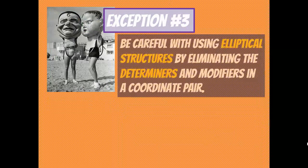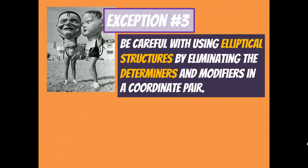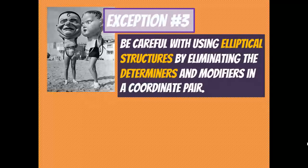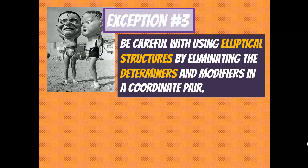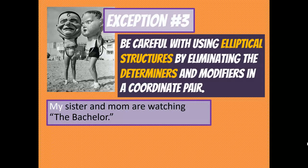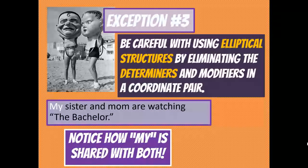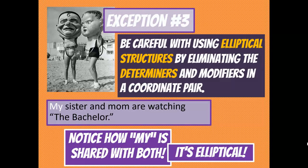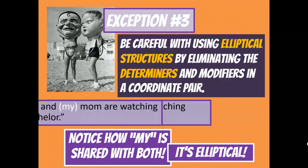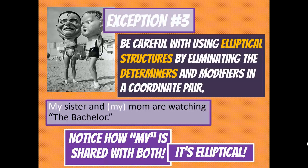The last exception is the elliptical structure — eliminating determiners and modifiers in a coordinate pair. For example, 'my sister and mom are watching The Bachelor': the word 'my' is being shared by both. We're really saying 'my sister and my mom,' and we call that elliptical — from 'ellipsis,' meaning something is understood. On a diagram, 'my' would go underneath the conjunction to show it refers to both sister and mom.